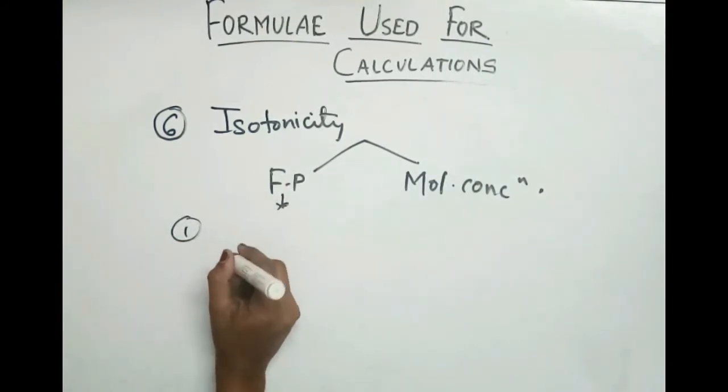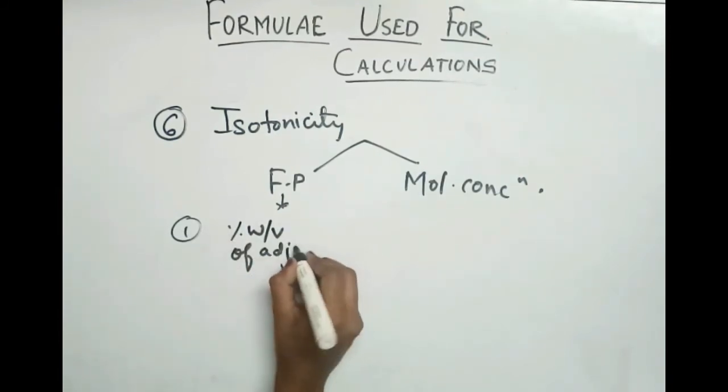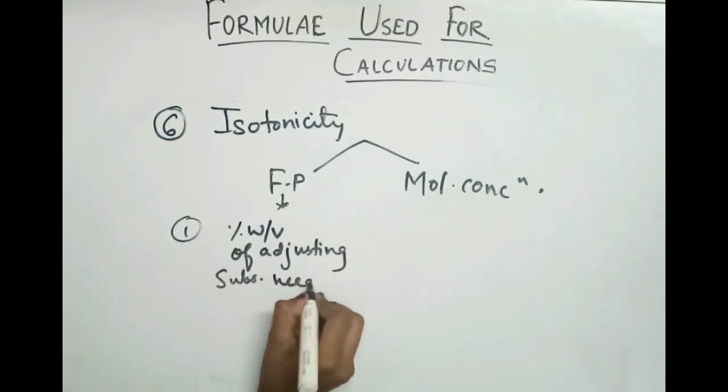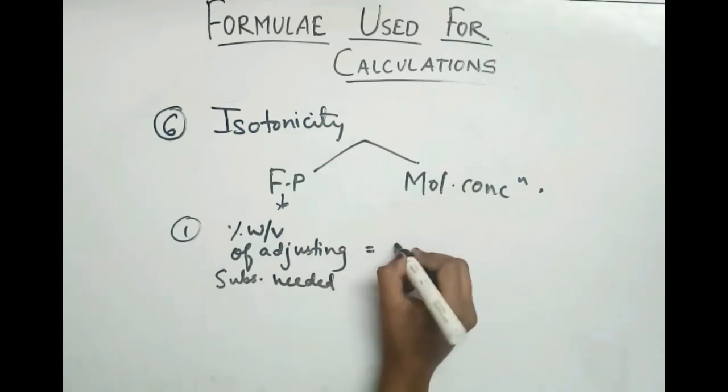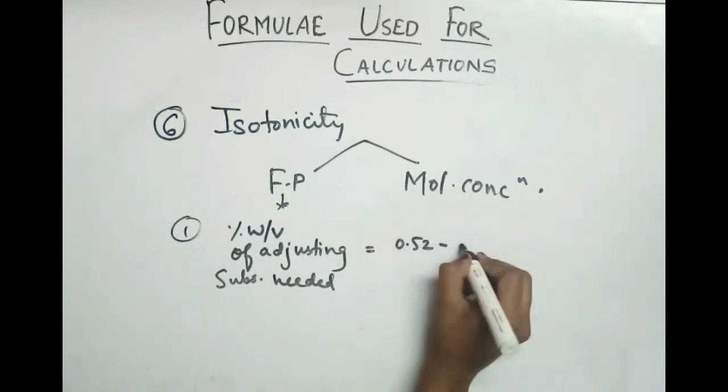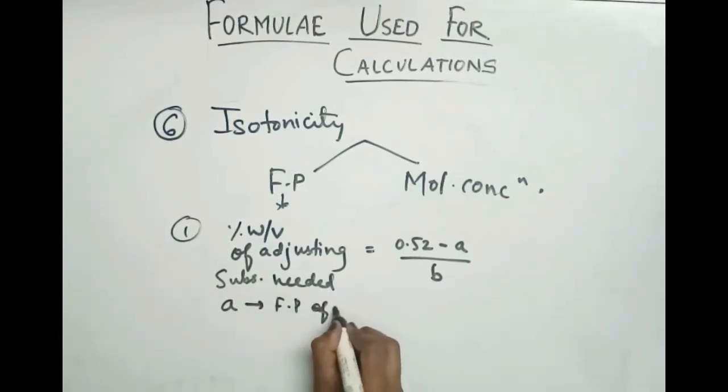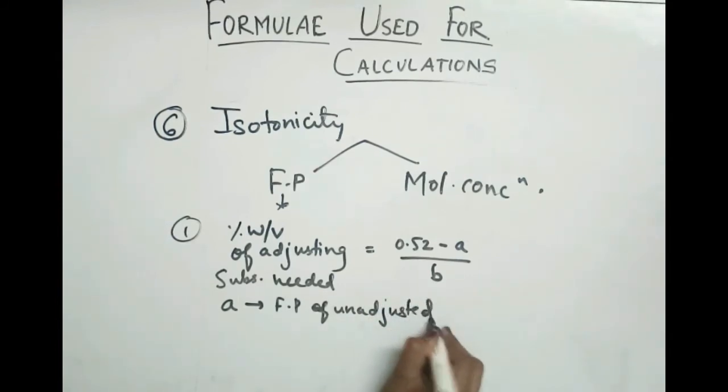The formula for freezing point method is: percent weight by volume of adjusting substance needed equals 0.52 minus a upon b. Small a indicates freezing point of unadjusted solution. Small b indicates freezing point of adjusting substance.